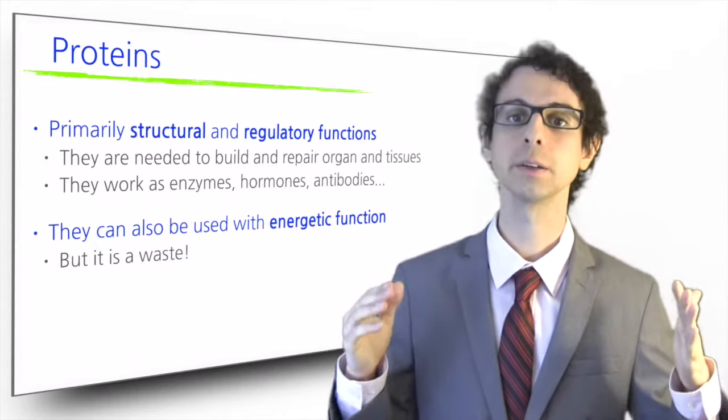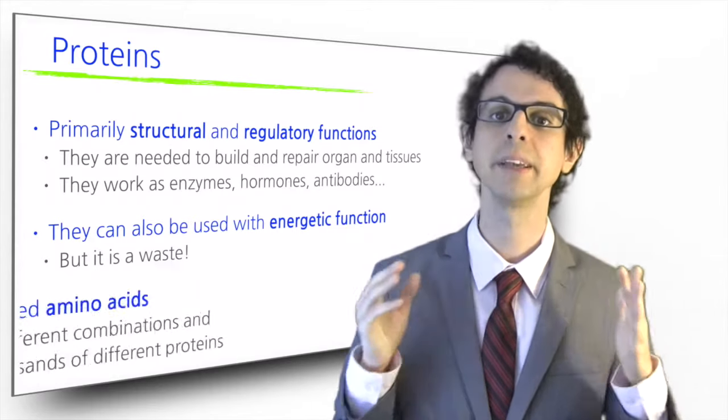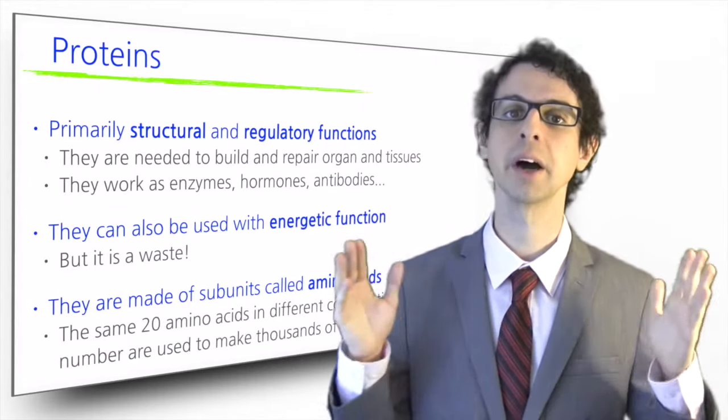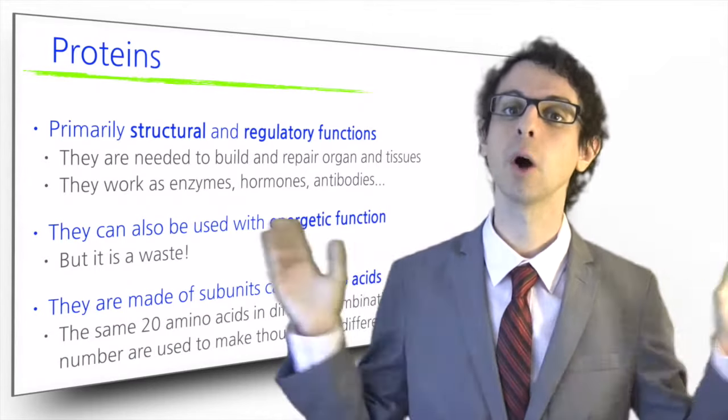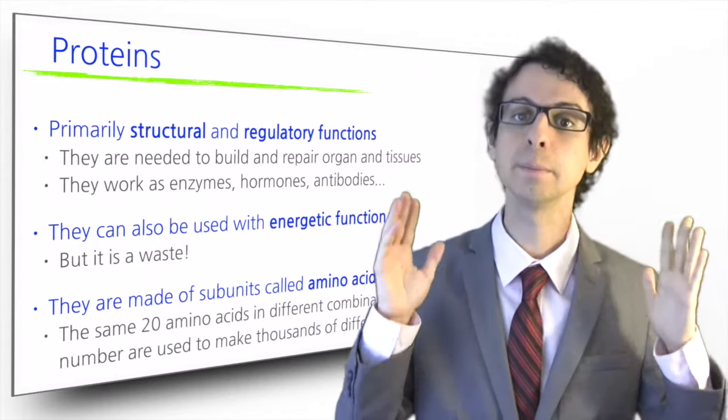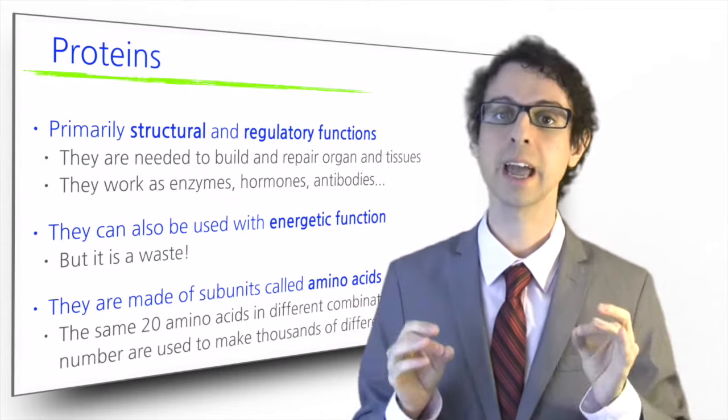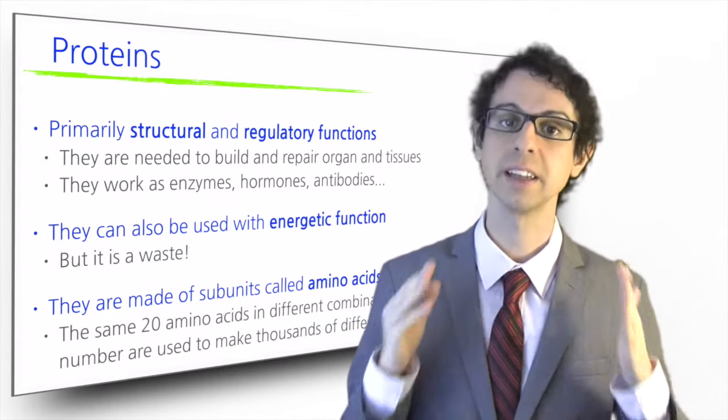Proteins are molecules made of a sequence of little units called amino acids. There are many thousands of proteins that our body is able to build, but they are all made with the same 20 basic building blocks, the amino acids, by linking them together in different combinations and in different numbers.